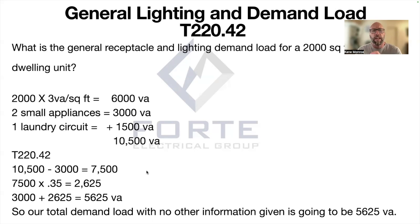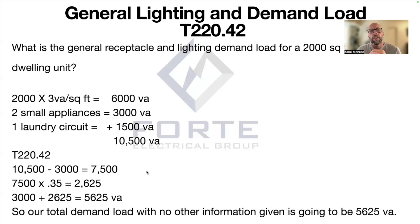If they're asking for amperage, we apply Ohm's law: take 5,625 divided by 240 volts, which gives us our amperage. But guys, those are your first three steps in determining your general lighting and circuitry load.